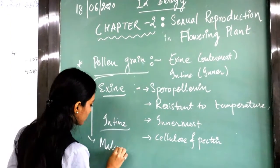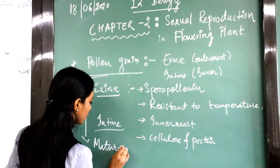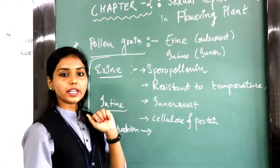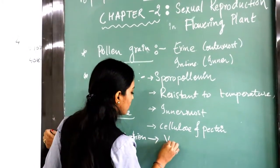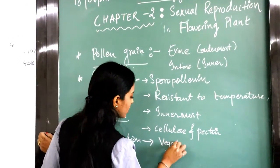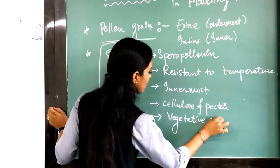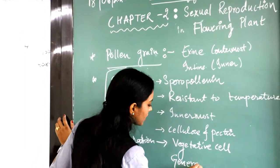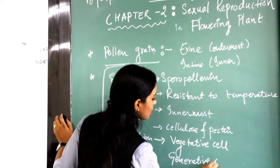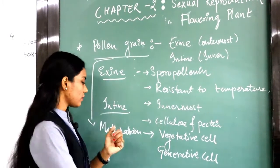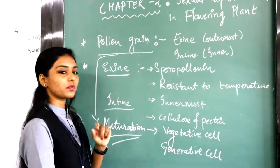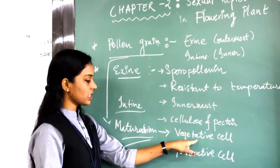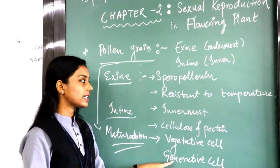Upon maturation, two types of cells are formed: the first is the vegetative cell, and the second is the generative cell. These two types of cells are formed upon maturation of a pollen grain. Now we will see vegetative and generative cells in detail.